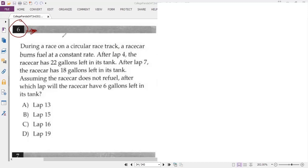So I'll re-explain this problem. I think I'll explain it in a much easier way than the other method. This is Chapter 4, Number 6, from College Board. Let me read the problem. During a race on a circular race track, a racecar burns fuel at a constant rate, so we have a constant rate here.